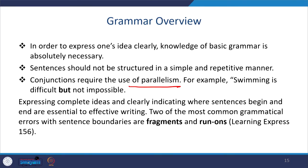For example, the advantages that public speaking provides are three: confidence, commitment, and vitality — all three are nouns. If a speaker uses three or four things, all must be in the same grammatical form; that is what is meant by parallelism. For example: 'Swimming is difficult but not impossible.' Also, expressing complete ideas and clearly indicating where sentences begin and end is essential not only for effective writing but for effective speaking as well.